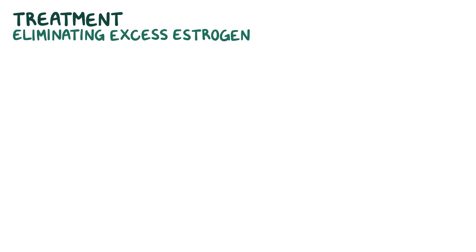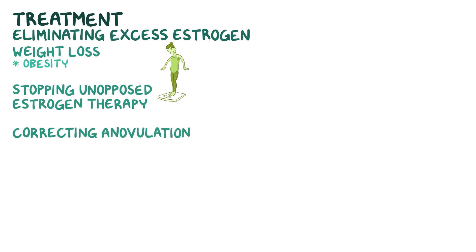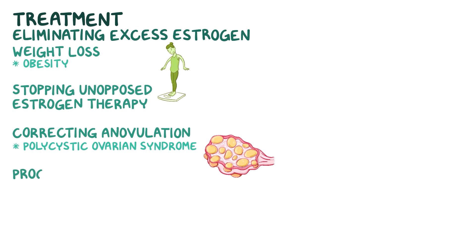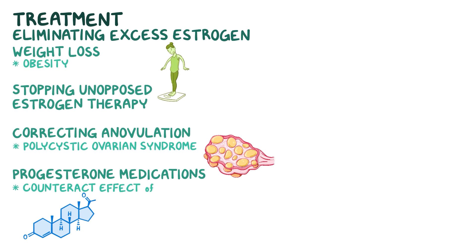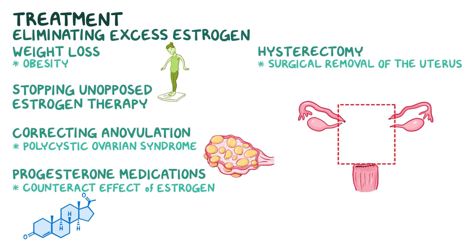Treatment for endometrial hyperplasia includes eliminating the underlying cause of excess estrogen, such as weight loss in cases of obesity, stopping unopposed estrogen therapy, and correcting the problem of anovulation in cases of polycystic ovarian syndrome. Progesterone-containing medications can also be used, which help in counteracting the proliferative effect of estrogen. In other cases, however, hysterectomy, where the uterus is surgically removed, might be the only treatment, especially if there's a high risk of progression to endometrial cancer.